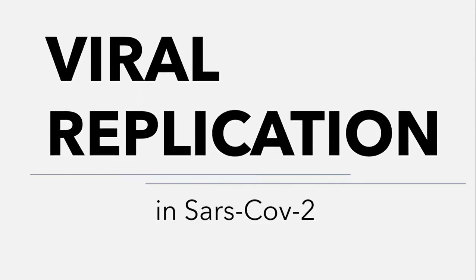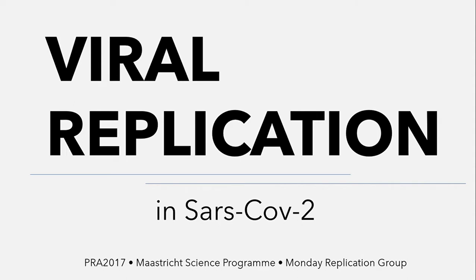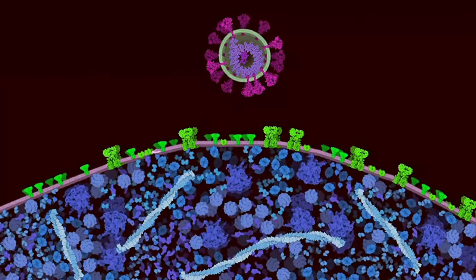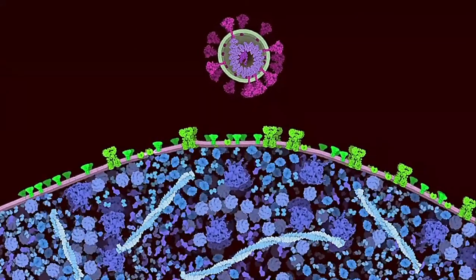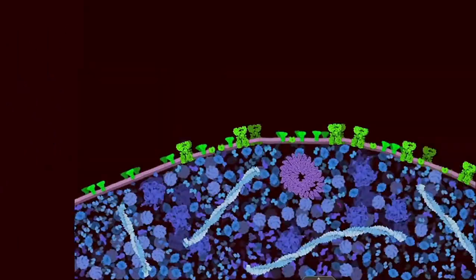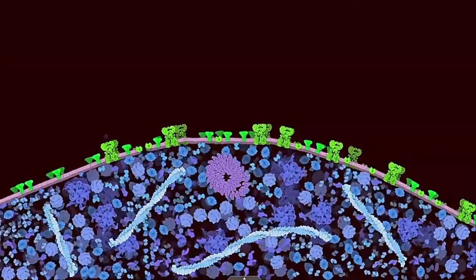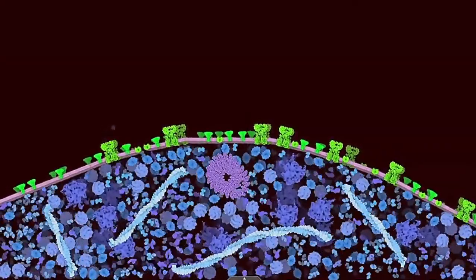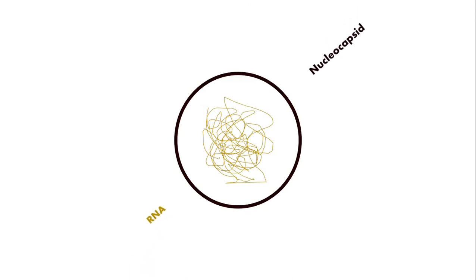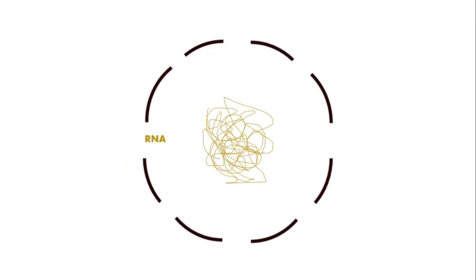In this video, we look at the replication process so central to the life cycle of the novel coronavirus. Though the virus is initially outside the host cell, our journey starts a bit later — we begin once it has shed its envelope and its core material has entered the cell. The core material contains a nucleocapsid protein layer, which quickly dissociates to expose the viral RNA.